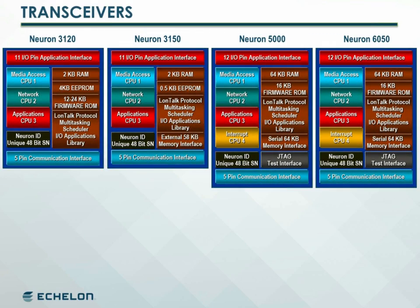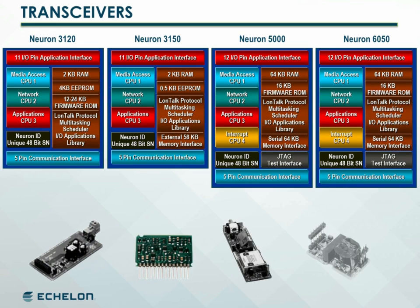A Lawnworks network can be built using many different transfer media. Because of this, Neuron chips or other Lawnworks compatible control processors are connected to the network via a separate electronic component called a transceiver. Transceivers provide a physical communication interface between the Neuron chip on a Lawnworks device and a Lawnworks network.